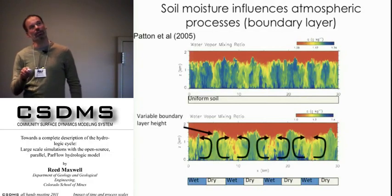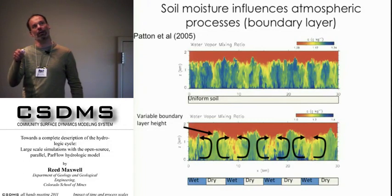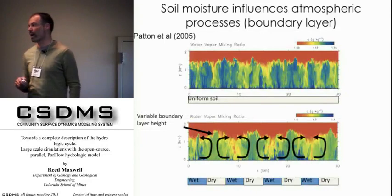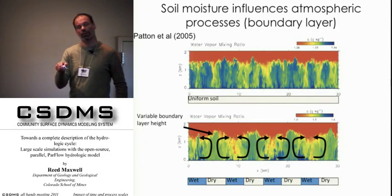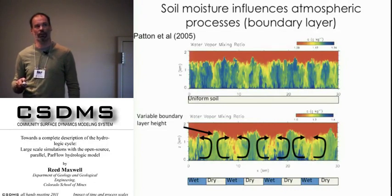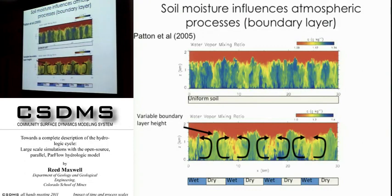This is water-vapor mixing ratio in the atmosphere. Under uniform conditions, there is some variability because of the turbulent nature of the atmosphere, but generally we get a pretty uniform atmospheric boundary layer height. Whereas in the wet-dry patches, the dry patches heat up more quickly, creating upwelling — a temperature differential that gives a vertical velocity differential, which is just a convection cell in the atmospheric boundary layer, driven by soil moisture conditions through evapotranspiration and latent heat flux.